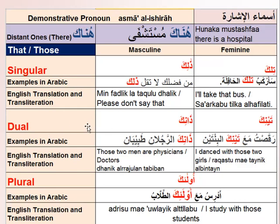Next is dual for far away. For two masculine objects or people that are far away, we say 'dhanika'. For example, 'dhanika arrajulun tabiban' means 'those two men are physicians' or 'those two men are doctors'. Doctor in Arabic is 'tabib', and for dual form we say 'tabiban'.